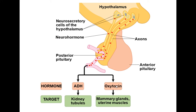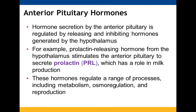ADH and oxytocin are the two posterior pituitary hormones. The anterior pituitary releases and inhibits hormones based on hypothalamus signals. For example, prolactin-releasing hormone from the hypothalamus causes the anterior pituitary to secrete prolactin, which plays a role in milk production.